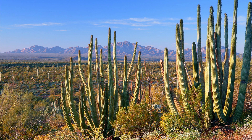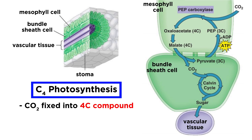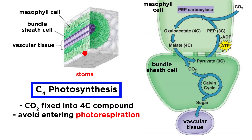Plants that have adapted to life in hot, dry places have actually evolved alternate methods of carbon fixation that save water without shutting down photosynthesis. One such method, developed by C4 plants like corn and sugarcane, involves preceding the Calvin cycle by first fixing CO2 into a four-carbon compound. Like C3 plants, C4 plants will close their stomata to conserve water. However, unlike C3 plants, C4 plants will continue to make sugars using photosynthesis instead of entering photorespiration.